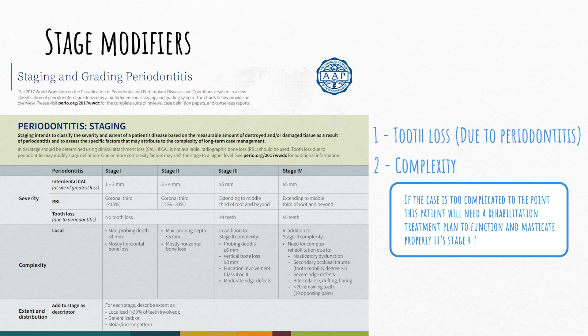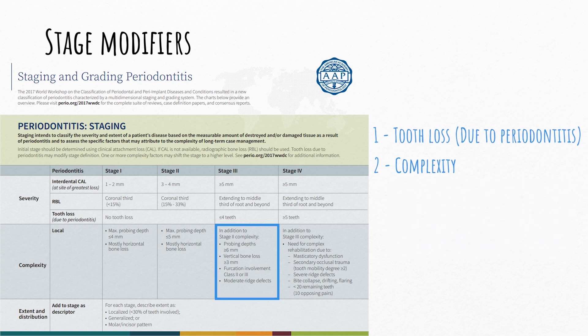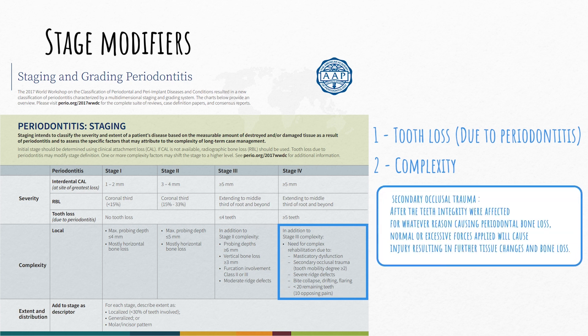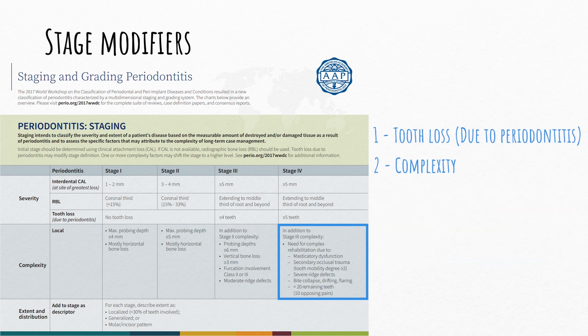If, other than the pocket depth being 6 mm or more, the patient has vertical bone loss of 3 mm or more, furcation involvement of class 2 or 3 according to Hamp's classification, or moderate ridge defects, then it's stage 3. If in addition to one or more of these factors we have masticatory dysfunction due to tooth loss, or secondary occlusal trauma causing tooth mobility of degree 2 or more — where normal or excessive forces cause further tissue changes and bone loss — then the diagnosis shifts to stage 4. Furthermore, severe ridge defects, bite collapse, drifting and flaring of teeth will also shift the diagnosis to stage 4.